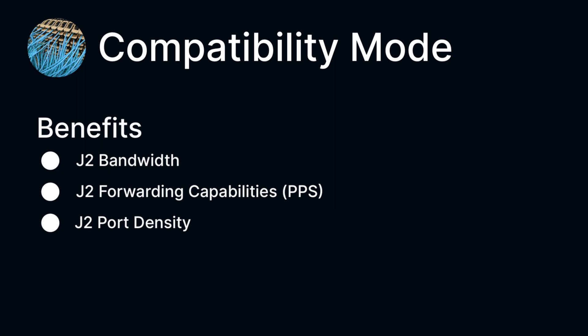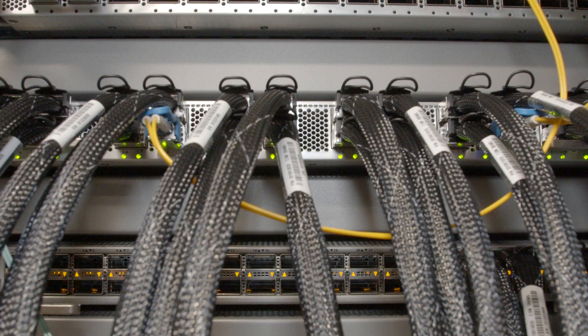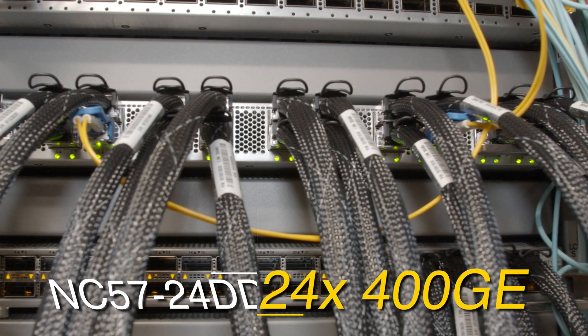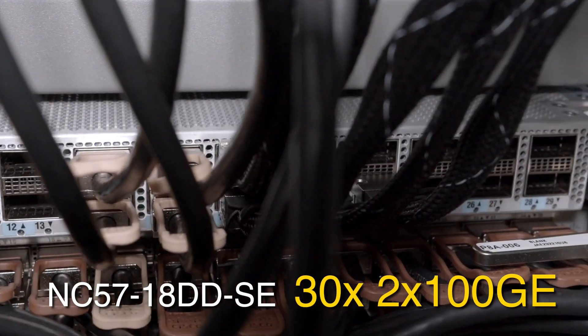With compatibility operation mode, the J2 cards will offer bandwidth, packets per second capability, and port density, but they will be limited to the features and scales supported on Jericho Plus — meaning the same protocols, functions, and database sizes. The main benefit of using such a mode is to offer high bandwidth with new cards while keeping your existing line cards in service in the router. By high bandwidth I mean up to 9.6 terabits per second with the 24DD line cards offering 24 ports of 400 Gigabit Ethernet. Another use case, for example, is the 18DD-SC line card giving 60 ports of 100 Gig per slot, compatible with SR4 and LR4 optics. Basically, the main idea behind the compatibility mode is investment protection — as simple as that.